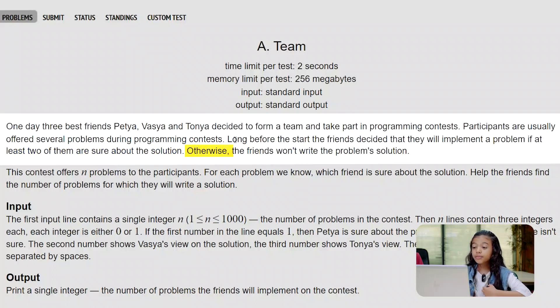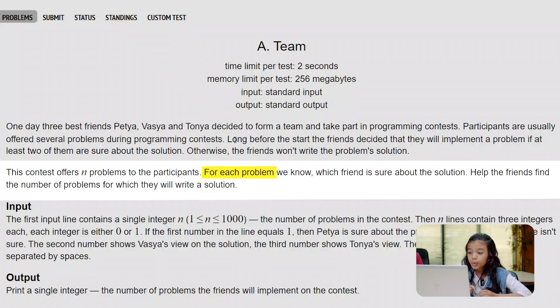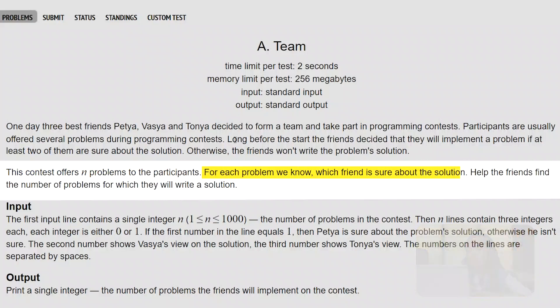Otherwise, the friends won't write the problem solution. This contest offers N problems to the participants. For each problem, we know which friend is sure about the solution. Help the friends find the number of problems for which they will write a solution. We have at least three friends.